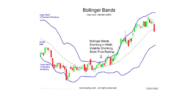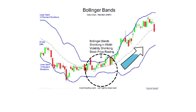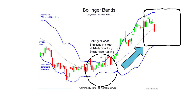Number one being the squeeze. The squeeze is the central concept of Bollinger Bands. When the bands come close together constricting the moving average, it's called a squeeze. A squeeze signals a period of low volatility and is considered by traders to be a potential sign of future increased volatility and possible trading opportunities. Conversely, the wider apart the bands move, the more likely the chance of a decrease in volatility and the greater the possibility of exiting a trade.